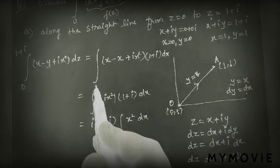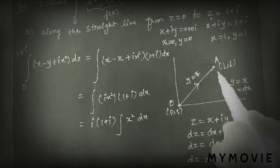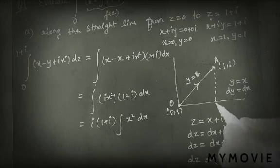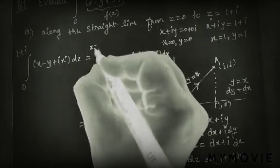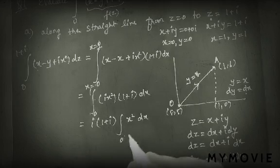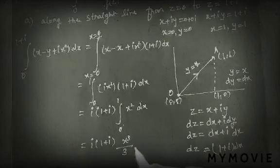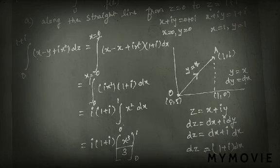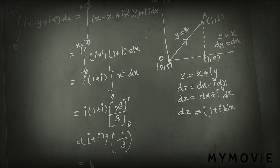Now we have the integration. We need the limits: x varies from 0 to 1 along this line. So the limits of x are 0 to 1. After substituting y equals x and dz equals (1+i)dx, the integrand simplifies to i·x² · (1+i) dx. Integrating: i(1+i) · [x³/3] from 0 to 1 gives i·(1+i)·(1/3). Since i² = −1, this equals (i − 1)/3. This is your answer.